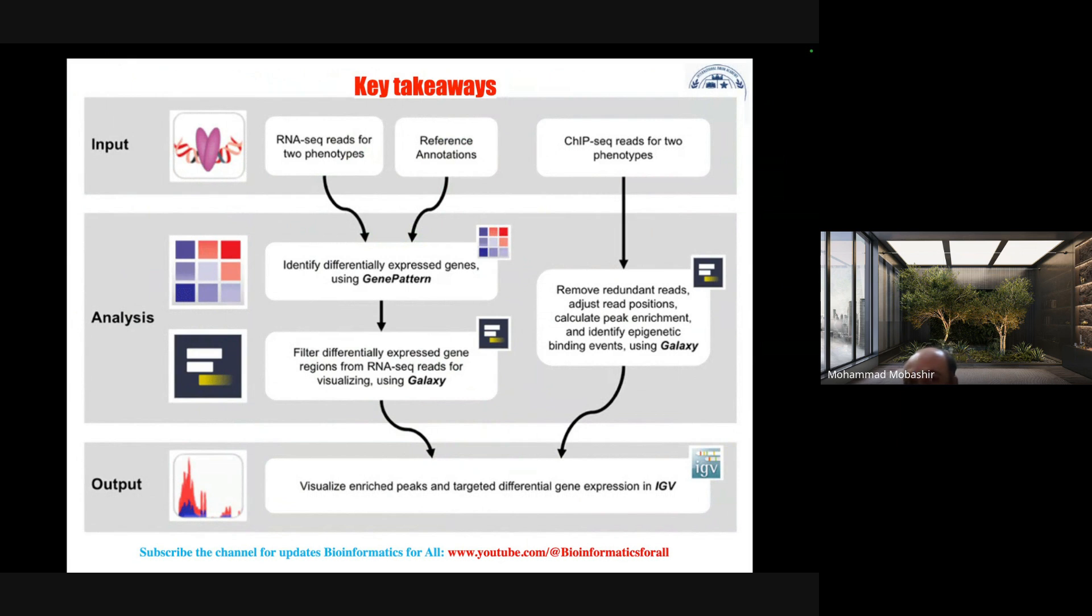For input, you can have a few files. If you're looking for RNA-seq data or working on microarray data, it could be .cel file or some other form. Input could be RNA-seq reads for two phenotypes, reference annotations, ChIP-seq data reads for two phenotypes. Analysis will include identifying differentially expressed genes using your desired software or your own code methods, then filter differentially expressed genes.